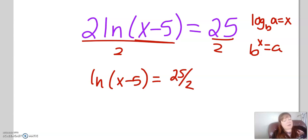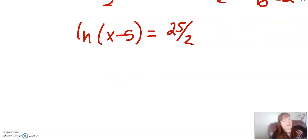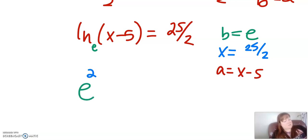Now I have it into my basic form, right? I have ln, which is really the same as log base e, of x minus 5 equals 25 over 2. So I have my base is e. My exponent is 25 over 2, because the answer to a log is an exponent. My argument is x minus 5. So let's rewrite this as e to the 25 over 2 equals x minus 5.